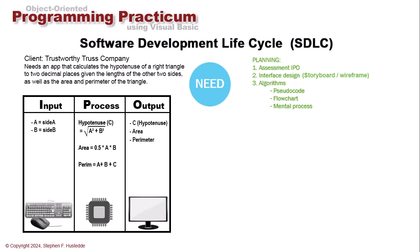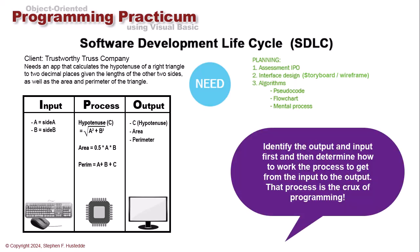Oftentimes there are many different processes taking place based on input and output. In this particular example for our hypotenuse calculator, the input is going to be the lengths of sides A and B. Then we're going to calculate the hypotenuse of side C as the square root of A squared plus B squared — remember the Pythagorean theorem from high school geometry. The area of the triangle is 0.5 times A times B, and the perimeter is the sum of sides A, B, and C. Our output to display is the hypotenuse, the area, and the perimeter.